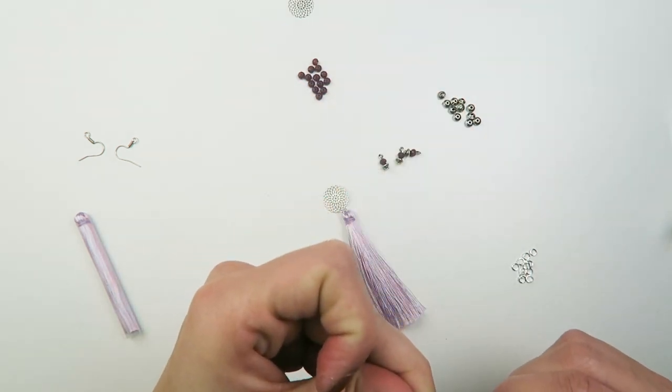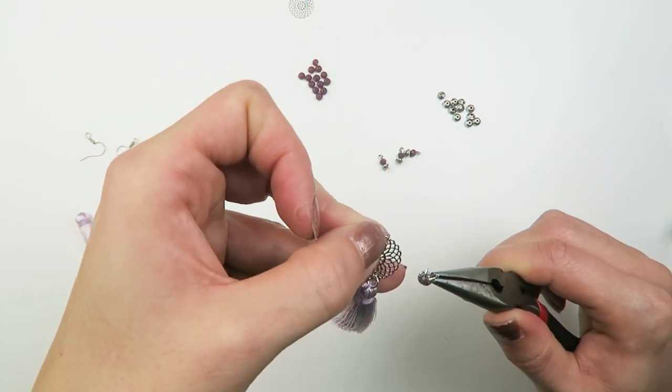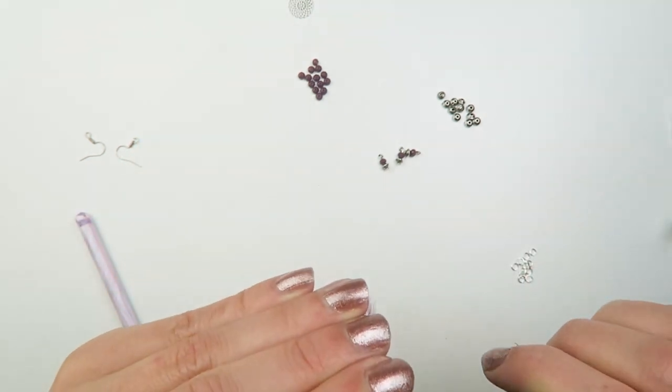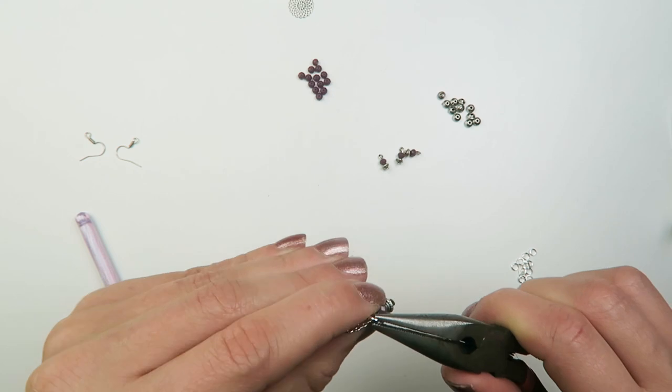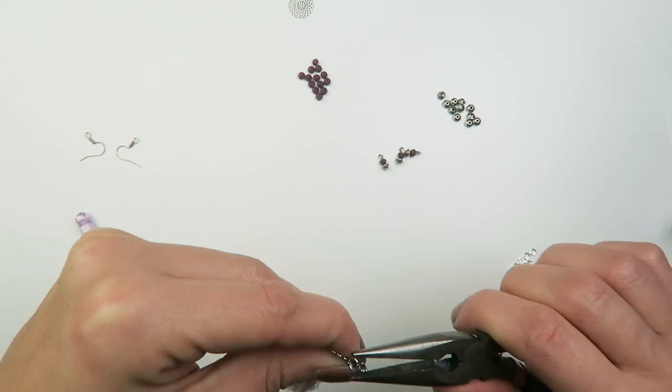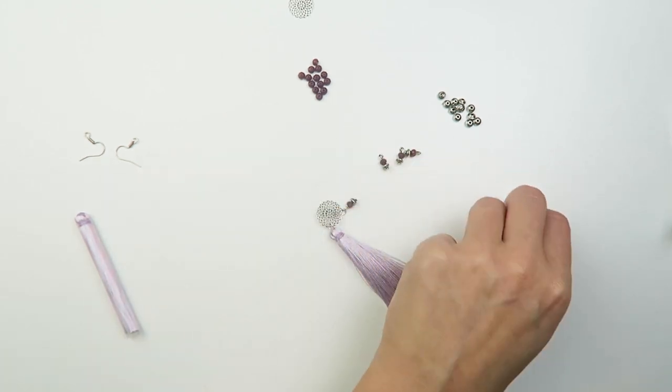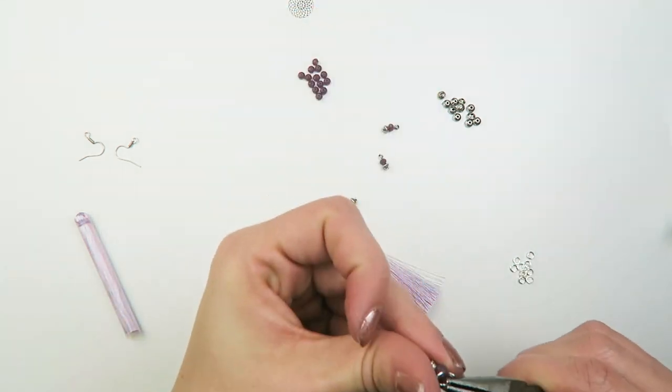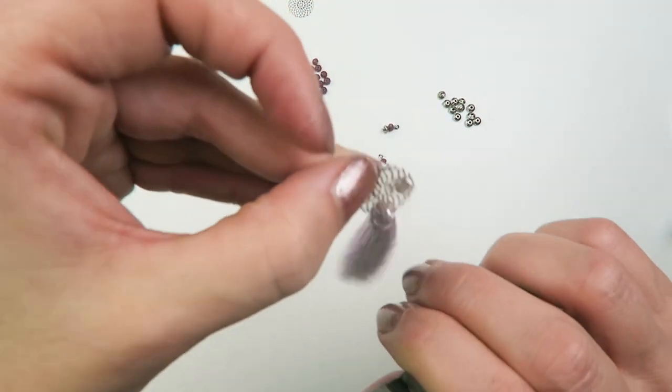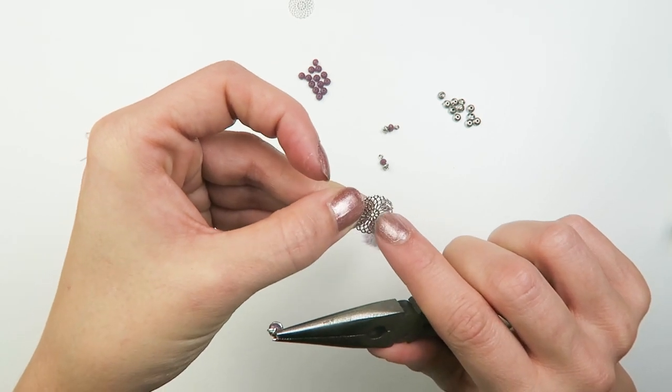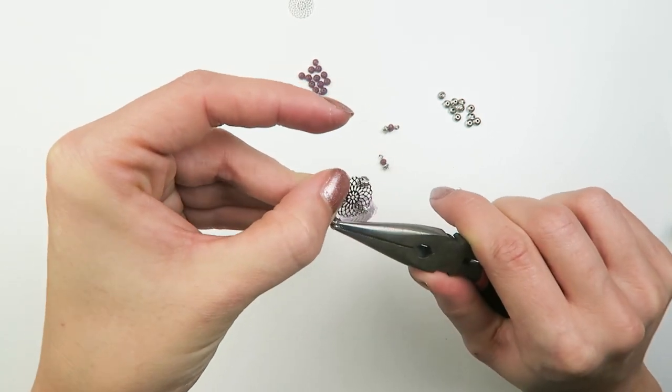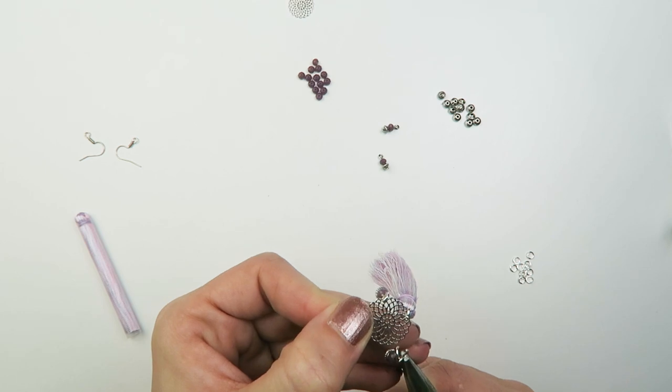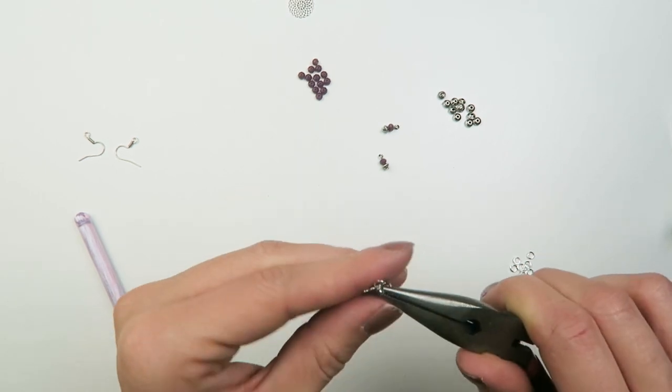And now I'm going to attach these two charms. So again just take a four millimeter jump ring. Let's see. This is the middle. Just make sure you're attaching the charms on the same height.